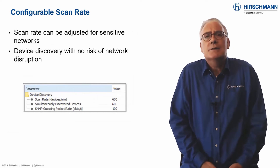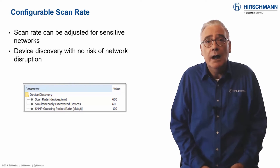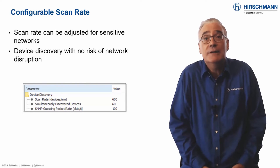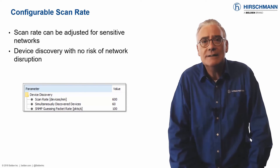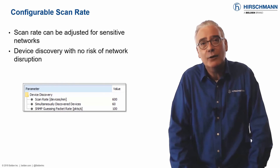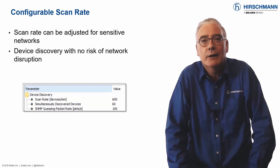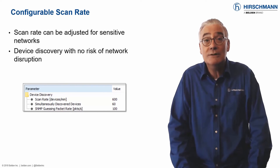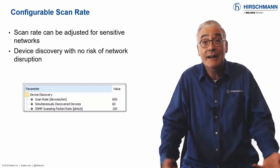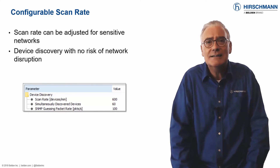A major difference between IT and OT networks is the connected equipment. An IT network typically supports equipment such as servers, PCs, and printers — this equipment is highly resilient to excessive network traffic. The same cannot be said for typical OT equipment such as PLCs, drives, or IO. The protocol stacks supported by these devices can easily be overloaded by the level of broadcast traffic generated during an IP address range scan, resulting in device failure.